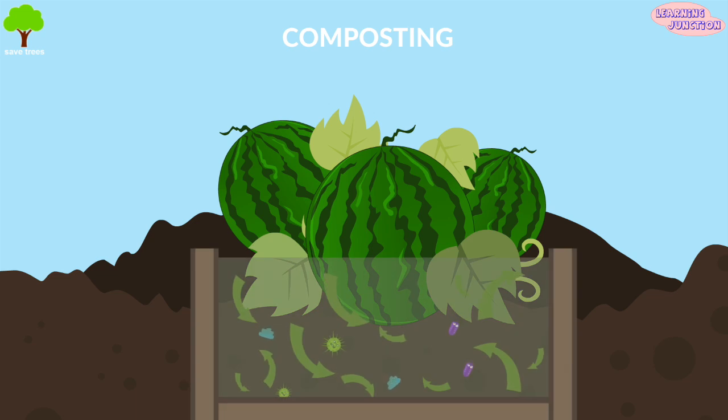Composting is when we collect organic waste and store it. This breaks down and can be used as fertilizer.